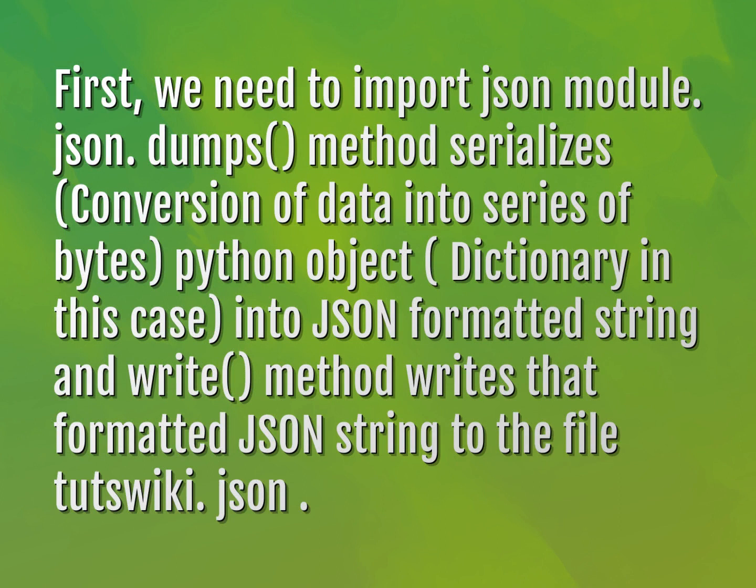JSON dumps method serializes — conversion of data into a series of bytes — a Python object, a dictionary in this case, into a JSON formatted string. The write method writes that formatted JSON string to the file tuts wiki.